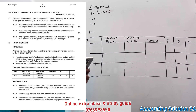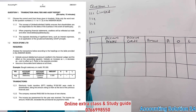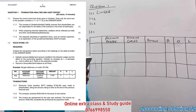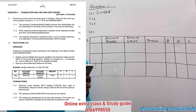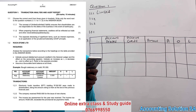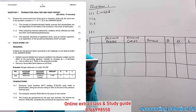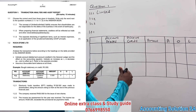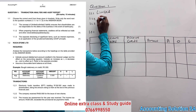Number two: when preparing financial statements, creditors will be reflected as trade and other — the options are receivable, payable, and equity. We need to pick one. When we talk about creditors in financial statements, we are referring to payables. So the answer is payables.